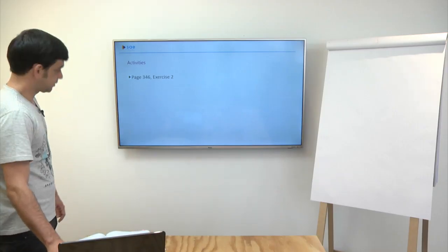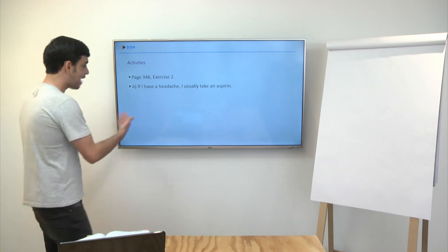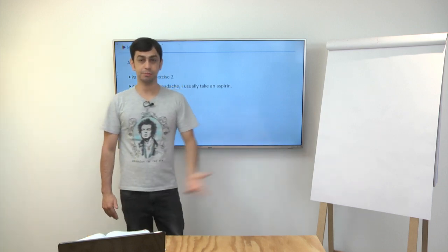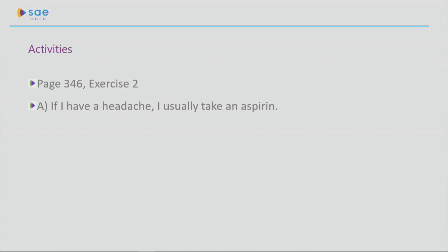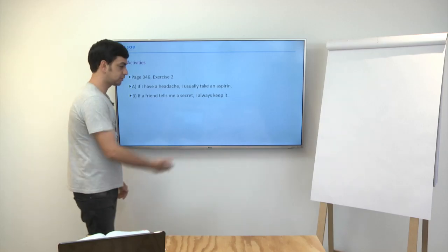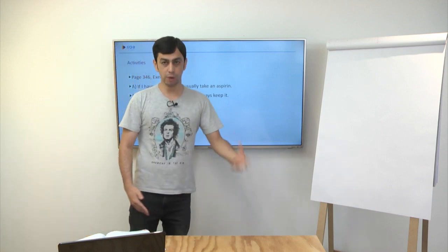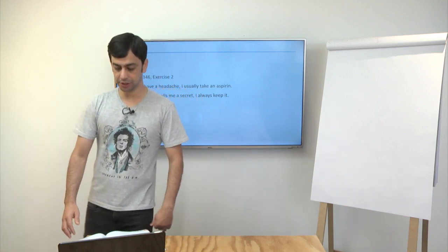Possible answers. If I have a headache, I usually take an aspirin. Usually, generally, what do I do? Take aspirin. If a friend tells me a secret, I always keep it. If a friend tells me a secret, I always keep the secret. Don't go spreading it to anyone.